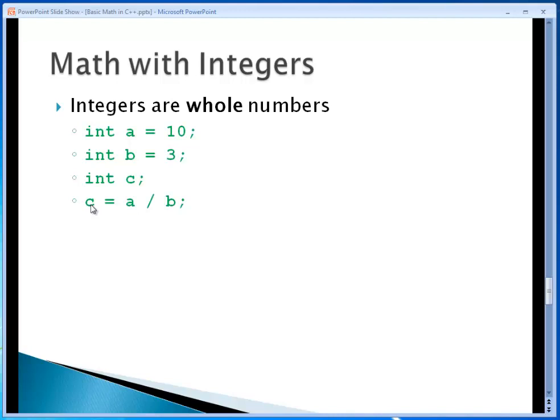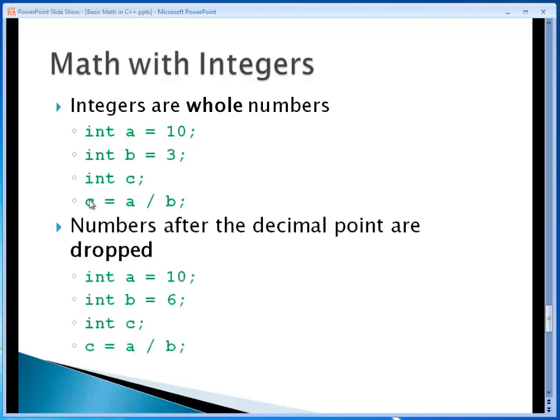Because again, it's a whole number and it cannot hold decimal values. So what happens with the decimal remainder in an equation like the one we just went over? Well, you need to know that when you do math with integers, the numbers after the decimal point are dropped. You don't round up, you don't round down, you just simply drop the values after the decimal point.